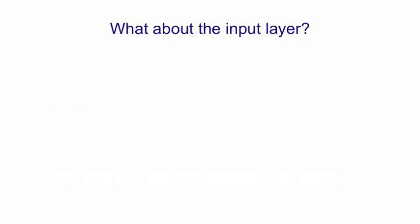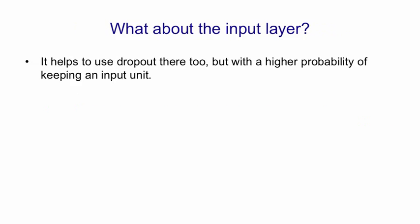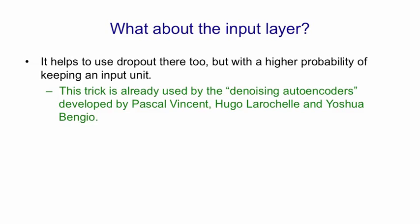What about the input layer? We can use the same trick there, too. We use dropout on the inputs, but we use a higher probability of keeping an input. But this trick's already in use in a system called denoising autoencoders, developed by Pascal Vincent, Hugo Larochelle, and Joshua Bengio at the University of Montreal, and it works very well.